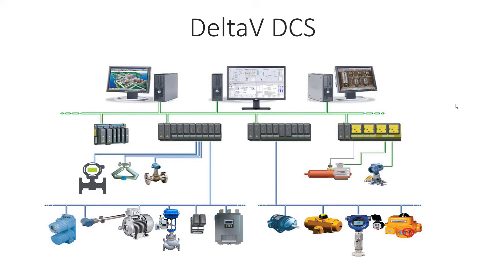After that, everything is connected to the control network, which connects the controllers and the workstations. You have operator screens, engineering workstations, and servers including an application server and an OPC server. Operator stations are screens through which you can visualize what is going on in the process — level, temperature, flow, motor RPM — giving you a complete view of the process.